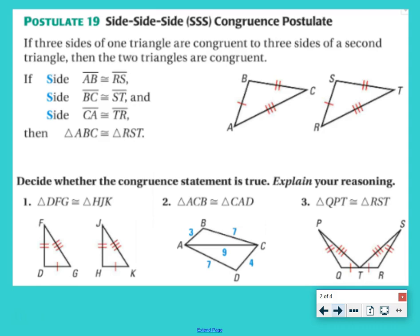In our examples, decide whether the congruence statement is true. Explain your reasoning. Triangle DFG is congruent to triangle HJK. Remember, it goes in order, so that means that DF needs to be congruent to HJ. So let's see, DF, HJ, that works. And then if we look, FG is going to need to be congruent to JK. Yes, since all the corresponding parts are congruent, they are congruent triangles by side, side, side.